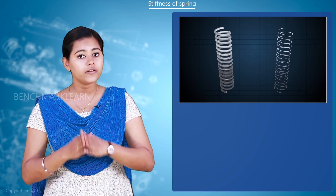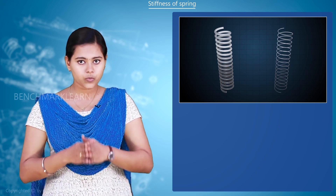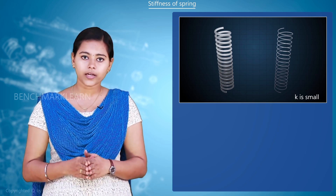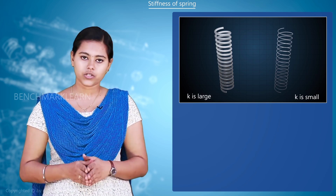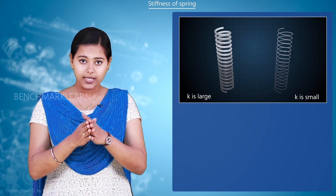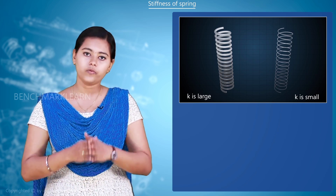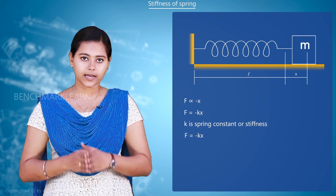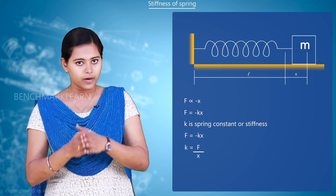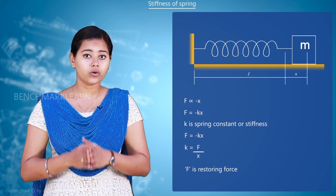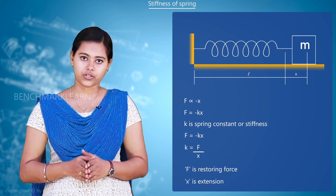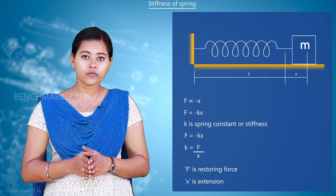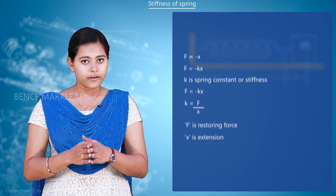Now let us understand the relevance of stiffness k. When you have a light spring, the value of k will be very small, whereas for a very heavy spring, the value of k will be very large. So by looking at the value of k, we can tell whether the spring is a lighter or heavier one. From the equation F = -kx, we get k = F/x, where F is the restoring force and x is the extension. So we define k, the stiffness of a spring, as the restoring force per unit extension.